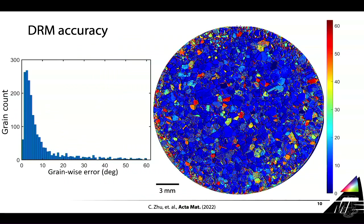Here is where the accuracy figure came from. This is a histogram showing the error we make when we guess orientation by DRM with respect to an EBSD measurement - we use EBSD as ground truth. Pixel by pixel, or in this case grain by grain, we compute the misorientation between the estimates and the measurements. This histogram has a peak at about 3 degrees, but there is a somewhat long shoulder, which says that for some grains - those highlighted here in hotter colors - the algorithms give you problems.